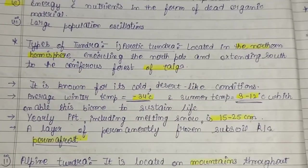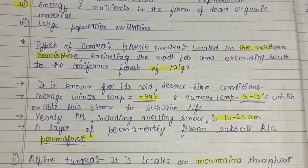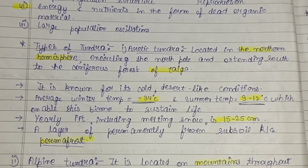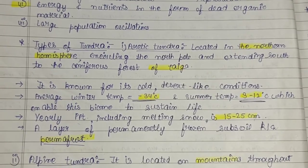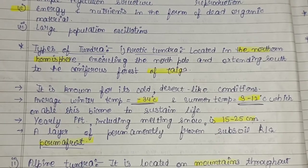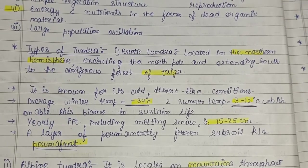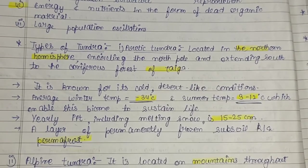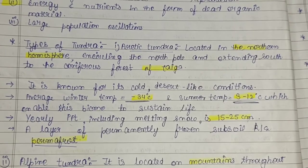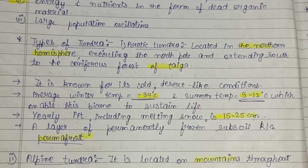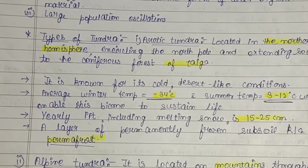There are two types of tundra: arctic tundra and alpine tundra. Arctic tundra is located in the northern hemisphere, encircling the north pole and extending south to the coniferous forests of the taiga. It is known for its cold desert-like conditions. Average winter temperature is minus 34 degrees Celsius; summer temperature is 3 to 12 degrees Celsius, which enables this biome to sustain life. Yearly precipitation including melting snow is only 15 to 25 centimeters.